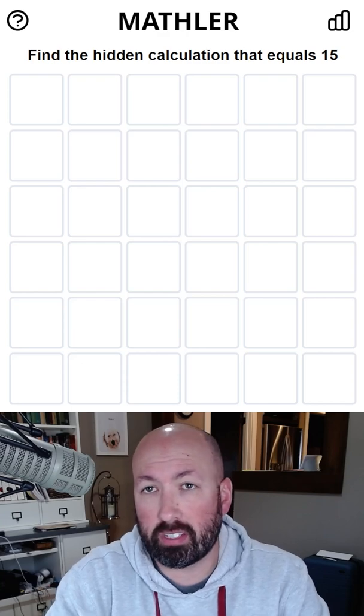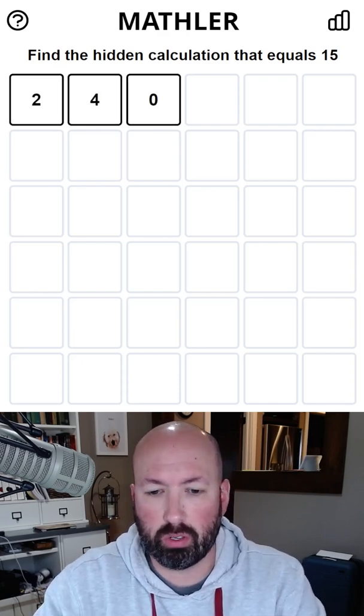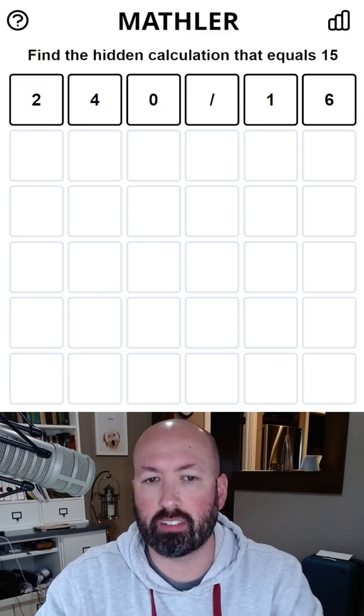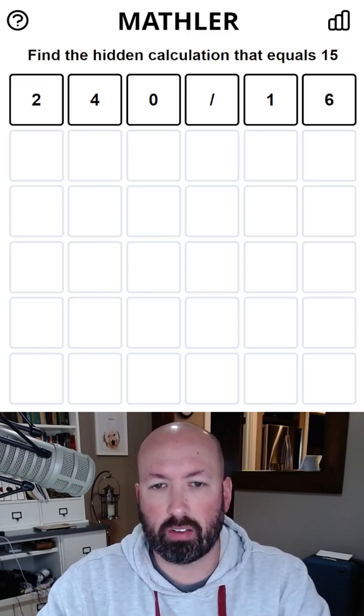15 times 16 is 240, so let's just go with 240 divided by 16. That seems like a good start. We've got several different digits.